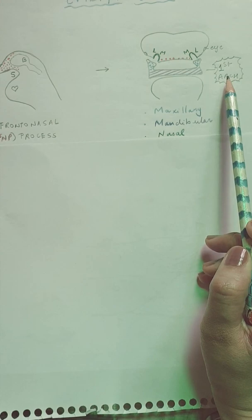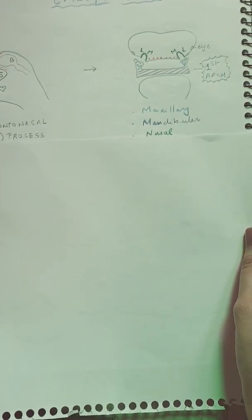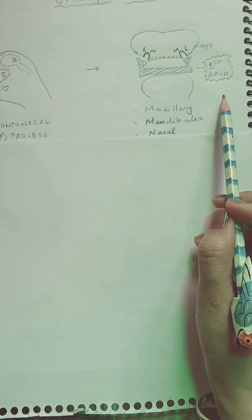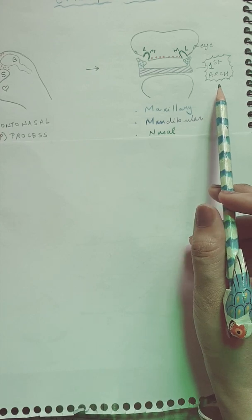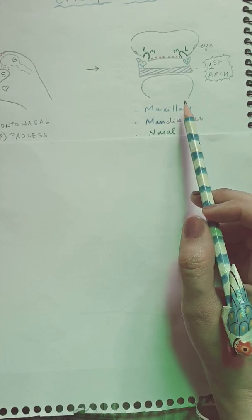The other two processes will develop from the first arch. That's why in my previous video I had taken the pain of explaining all the pharyngeal arches, because this first arch is of importance here. The first arch, the mandibular arch, gives rise to two processes which are the maxillary and the mandibular processes.